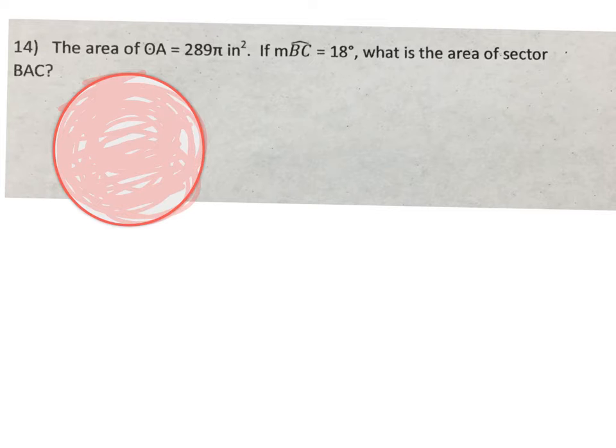Now, somewhere on the circle are letters B and C that have an 18-degree angle between them. So we want to know what is the area of this tiny little sector right here.